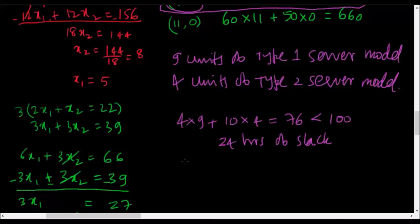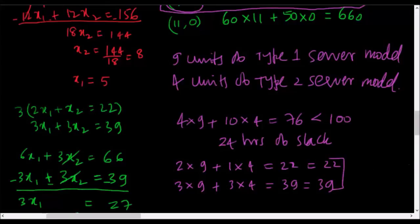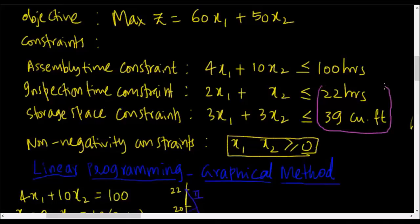Inserting into the second constraint: 2 times 9 plus 1 times 4 equals 22, which exactly equals the right-hand side of 22 — we are consuming the entire 22 hours in the inspection section. For the third constraint: 3 times 9 plus 3 times 4 equals 27 plus 12 equals 39, which equals the right-hand side of 39 — we are utilizing the entire 39 cubic feet of space. Constraints where the left-hand side equals the right-hand side are called binding constraints.